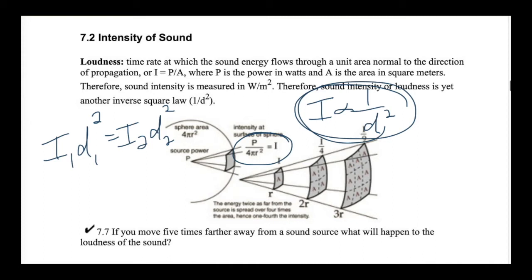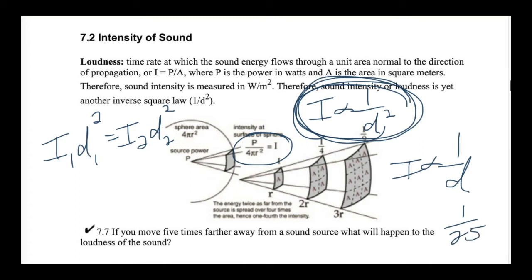So 7.7 says: if you move 5 times farther away from a sound source, what will happen to the loudness or intensity of the sound? It's obvious that it's going to be softer. But the answer is not 1/5 as much — it's an inverse square law, not just an inverse law. If it were proportional to 1 over displacement, it would be 1/5. But with inverse square law, it would actually be 1/25th as much.